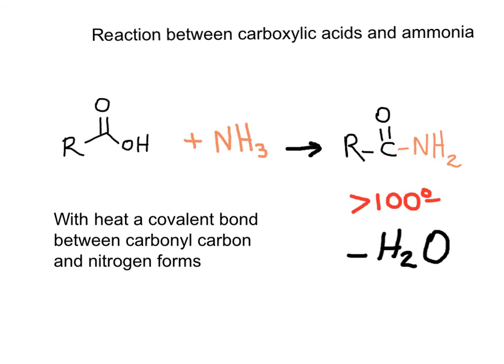To summarize: the reaction between ammonia, which is a gas, and a carboxylic acid at high temperature will produce an amide, and this is a primary amide.